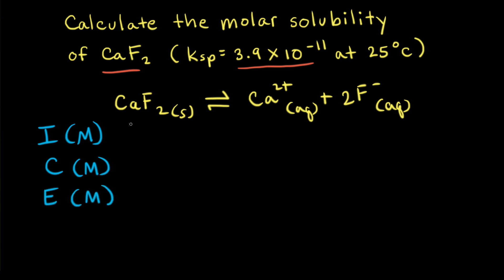Before any of the solid calcium fluoride dissolves, the initial concentrations of calcium 2+ ions and fluoride anions in solution is 0. So we can go ahead and put a 0 in here for the initial concentration of the ions in solution.